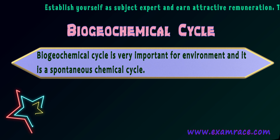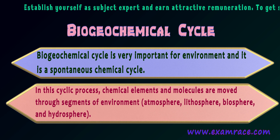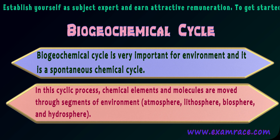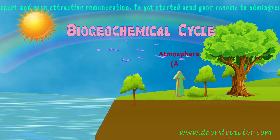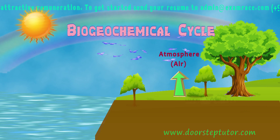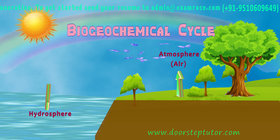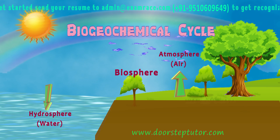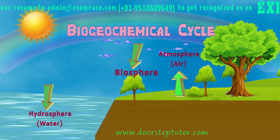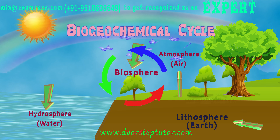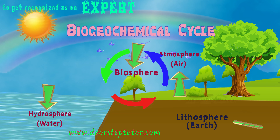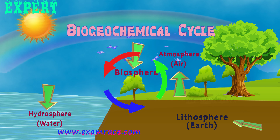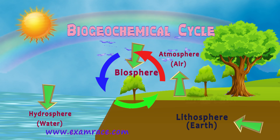This biogeochemical cycle is very important for the environment and is a spontaneous chemical cycle. In this cyclic process, chemical elements and molecules are moved through segments of the environment. The segments of the environment include the atmosphere (air), the hydrosphere (water), the biosphere (all living organisms and plants), and the lithosphere.